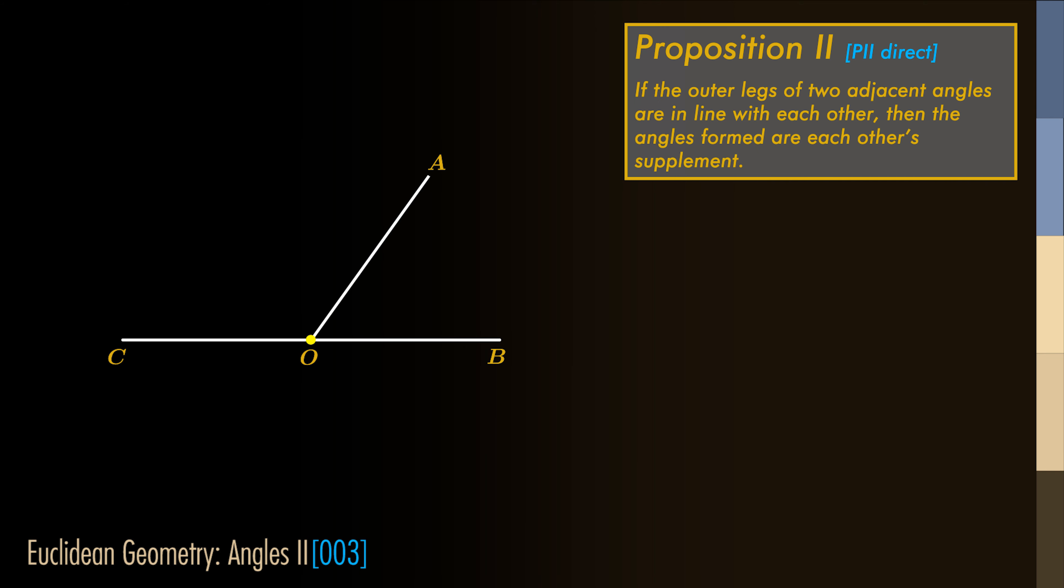We are now ready for proposition number 2. If the outer legs of two adjacent angles are in line with each other, then the angles formed are each other's supplement.